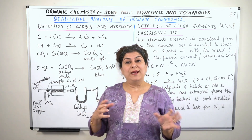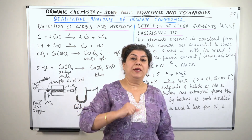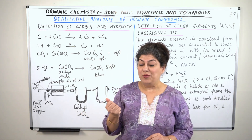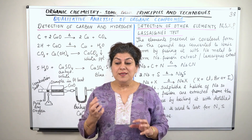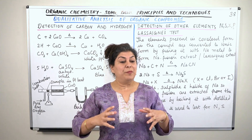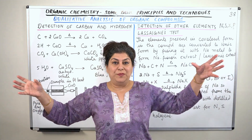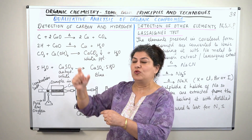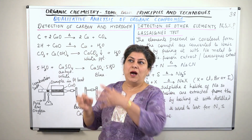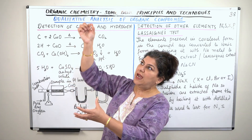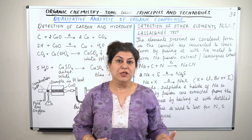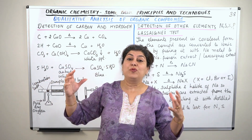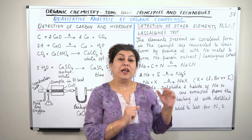Now imagine you are given a powder of an organic compound and asked to identify it. Organic compounds are so numerous that they have been given a separate branch of chemistry — organic chemistry. These are covalent compounds, so reactions will be slow, making identification more complex.